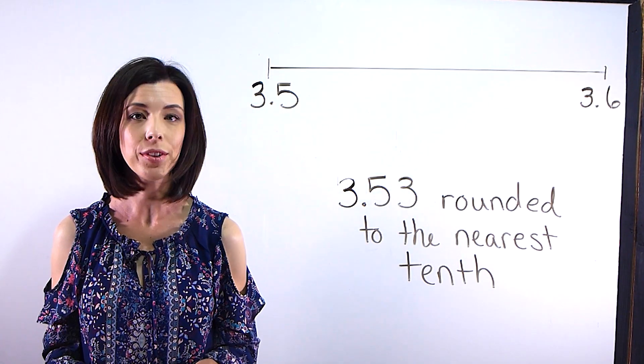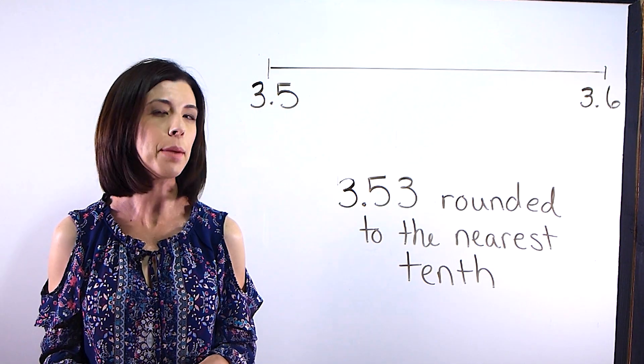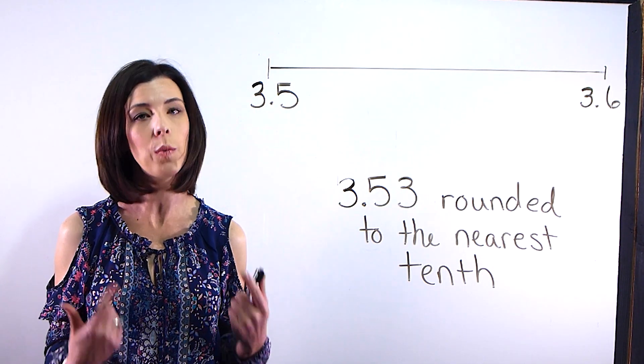This video is going to show you how to round 3 and 53 hundredths to the nearest tenth. Let's use a number line to actually check and see what's going on when we round.